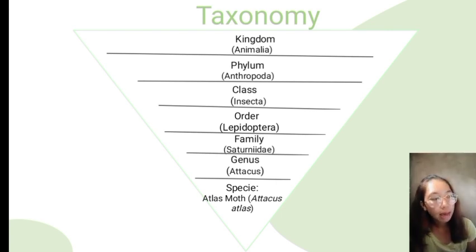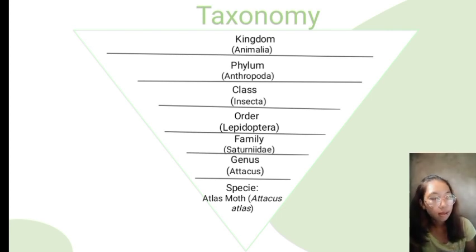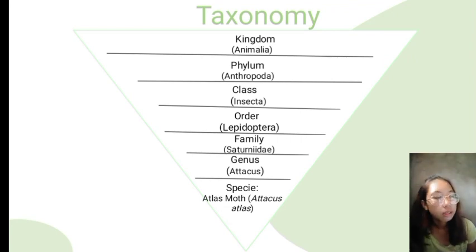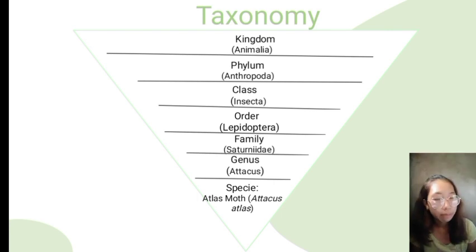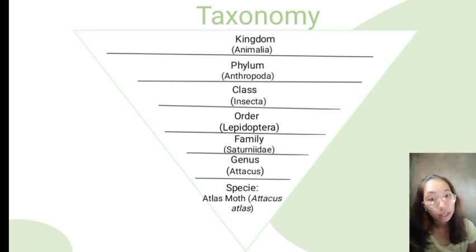It is believed that the name Atlas is from Greek mythology, which is fitting because moths of Family Saturniidae are also named from Greek mythology — for example, the Promethea Moth and Hercules Moth. Another perspective on its name comes from the patterns of its wings. The Cantonese name of the moth means 'Snake's Head Moth,' which is also part of its defense against predators, and we'll be talking about that more later.